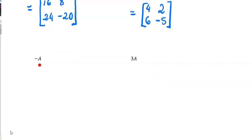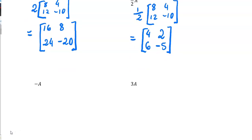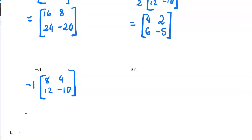Now let's look at negative A. Really, that means negative one times by our matrix A. So negative one times eight gives negative eight, negative one times four is negative four, negative one times twelve is negative twelve, and negative one times negative ten gives you positive ten.